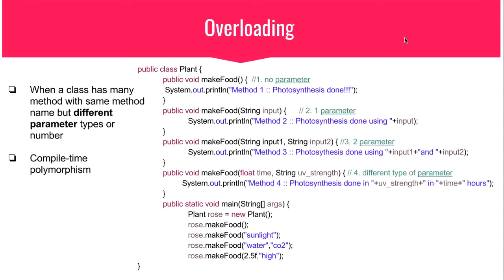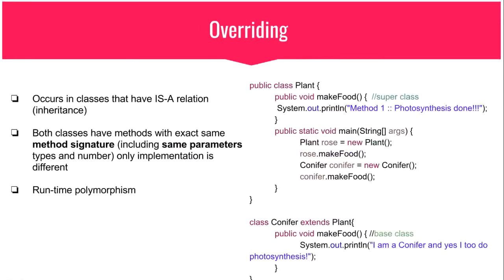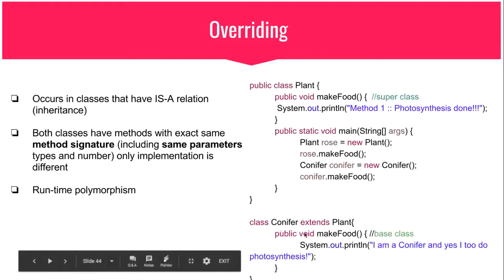Moving on to overriding. Overriding occurs in inheritance — there is an 'is-a' relation — and both the superclass and subclass have the exact same method with the exact same method signature. Unlike overloading, where parameter types and number were required to be different, in overriding the parameter types and number everything has to be the same.